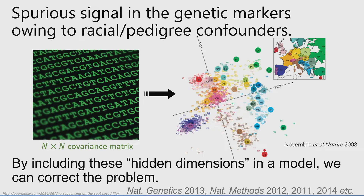Something that can happen is hidden confounding factors from diversity in the population — diversity related to racial background or clusters of people like pedigrees, parents, and grandparents. If you have this kind of structure in the data, things get really messed up. We can build a covariance matrix from the DNA and use a linear embedding — actually just PCA. Here it's the covariance matrix of a large cohort where we know their origin in Europe, projected into a two-dimensional space that roughly recapitulates the map of Europe.